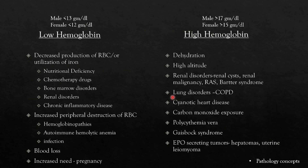Let's see the causes of low and high hemoglobin. Low hemoglobin is defined as less than 13 g/dL in males and 12 g/dL in females. Causes of low hemoglobin include: decreased production of RBCs or decreased utilization of iron (nutritional deficiency, chemotherapeutic drugs, bone marrow disorders, renal disorders, chronic inflammatory disease); increased peripheral destruction of RBCs (hemoglobinopathies, autoimmune hemolytic anemia, infection); and blood loss or increased need such as in pregnancy.